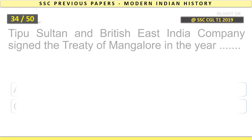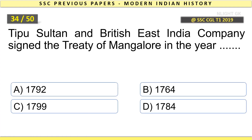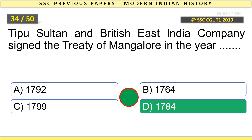Tipu Sultan and the British East India Company signed the Treaty of Mangalore in the year 1784.